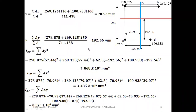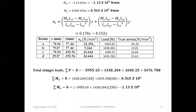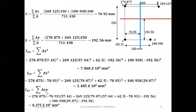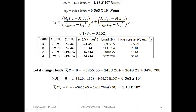With Ixx, Iyy, and Ixy obtained, substitute the Mx and My values given in the problem to get the sigma_z expression: sigma_z = 0.178x − 0.152y. Now for each boom A, B, C, D, use the coordinates to substitute x and y into this expression to get sigma_z at each boom.